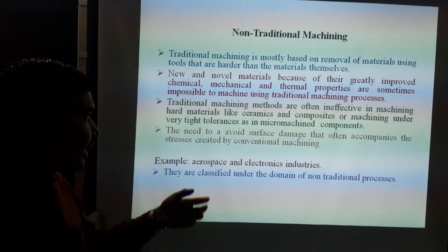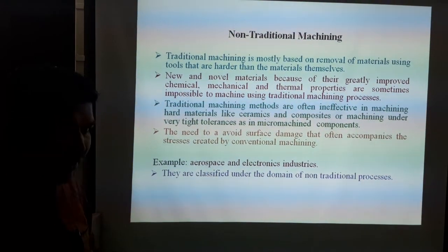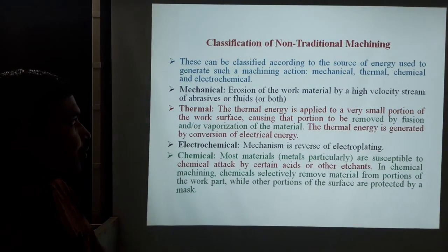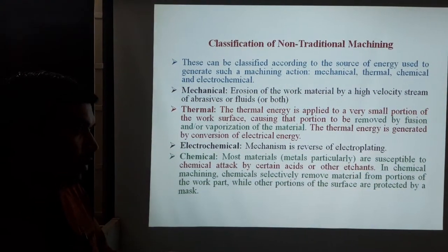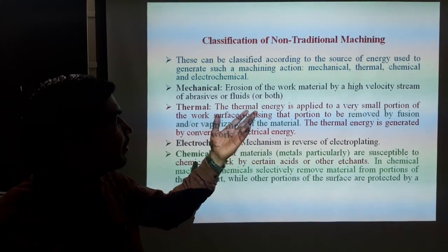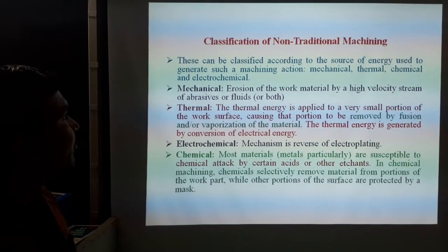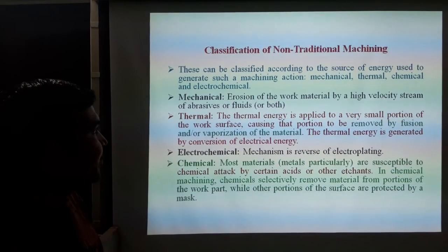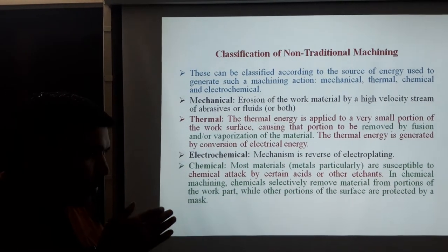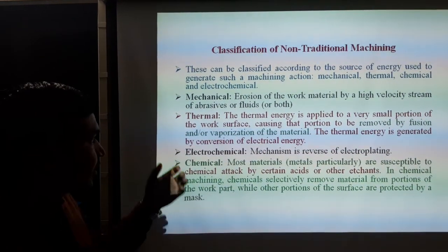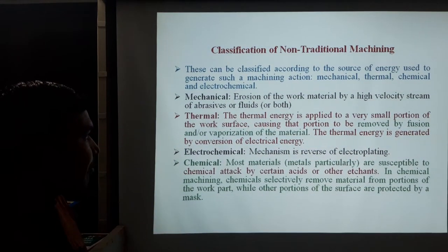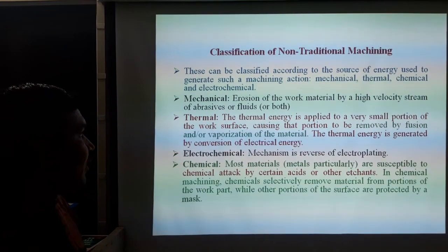Non-traditional machining process is used to remove excess material using tools that are harder than the work material itself. New and novel materials, because of their greatly improved chemical, mechanical, and thermal properties, are sometimes impossible to machine using traditional processing. Traditional machining methods are often ineffective for hard materials like ceramic, composite material, alloy material, or super alloy material under very tight tolerances. Non-traditional machining can be classified according to sources of energy or sources of material removal into four categories: mechanical, thermal, chemical, and electrochemical processing. For mechanical process, mechanical energy is applied for erosion of work material using high-velocity streams of abrasive or fluid to remove excess material. For thermal processing, thermal energy is applied to a very small region of the work surface, causing material to be removed by fusion or vaporization.